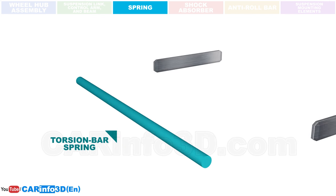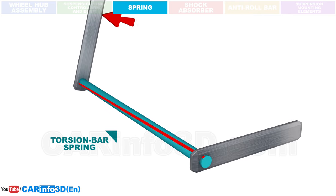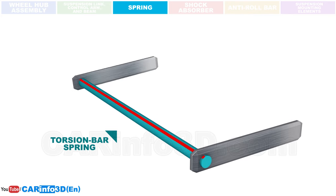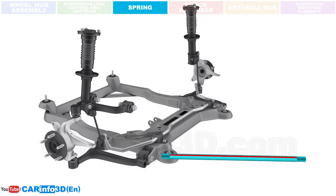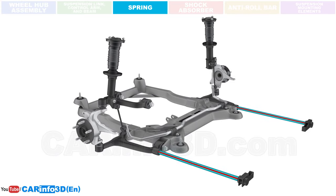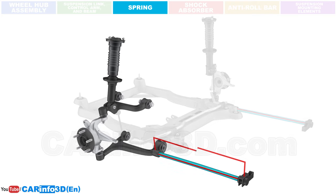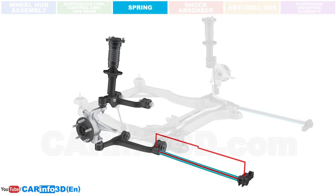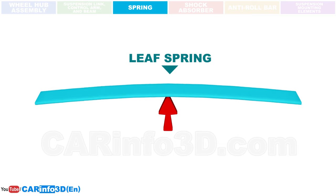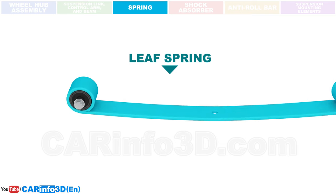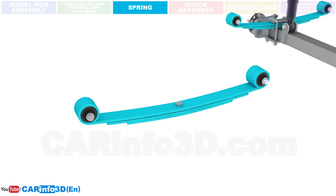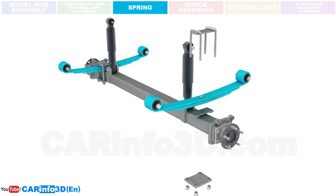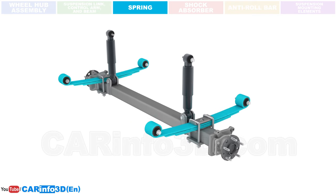A torsion bar spring is a metal rod that can twist. It is rarely seen in cars, but is common in multi-axle and tracked vehicles. A leaf spring is made up of several metal sheets. In automobiles, such springs are only used in some SUVs, but they are widely used in truck vehicles.